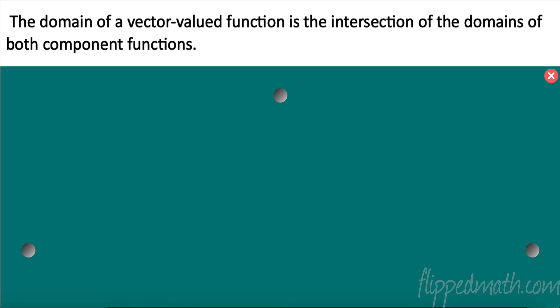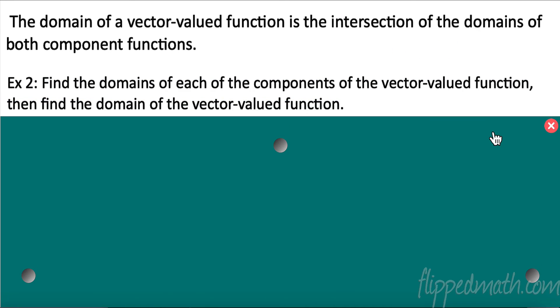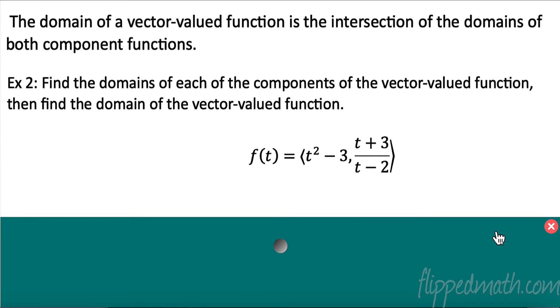When we looked at these vector-valued functions, we need to talk about a couple of things. Number one, the domain of a vector-valued function is the intersection of the domains of both of the component functions. So the domain of the x component and the domain of the y component, that's going to be the domain of our vector-valued function. So let's find the domains of each of the components and then of the vector-valued function in total. Let's recall a few things. Domain - we have a couple of rules. Number one, we cannot divide by zero. That's a big one. Number two, we cannot take the square root or actually any even root of a negative number. Those are like the biggest qualifiers for domain. So let's take a look here.